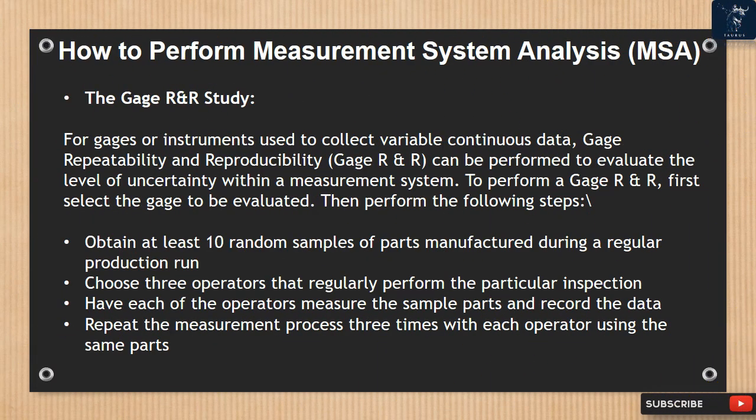The gauge R&R study. For gauges or instruments used to collect variable continuous data, gauge repeatability and reproducibility, gauge R&R, can be performed to evaluate the level of uncertainty within a measurement system. To perform a gauge R&R, first select the gauge to be evaluated. Then obtain at least 10 random samples of parts manufactured during a regular production run, choose three operators that regularly perform the particular inspection, have each of the operators measure the sample parts and record the data, and repeat the measurement process three times with each operator using the same parts.